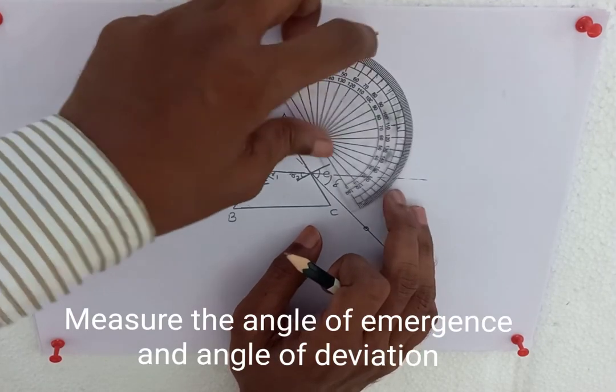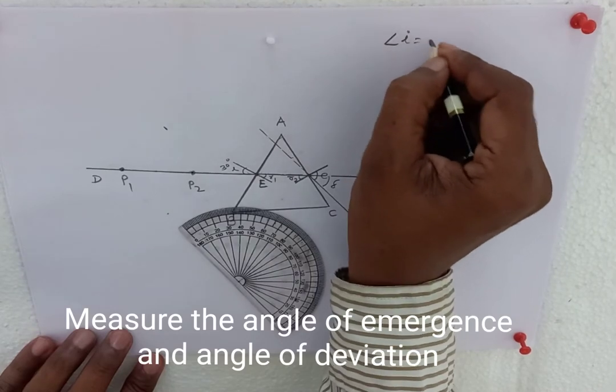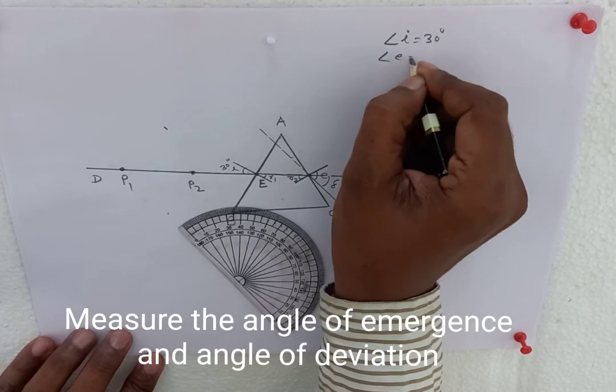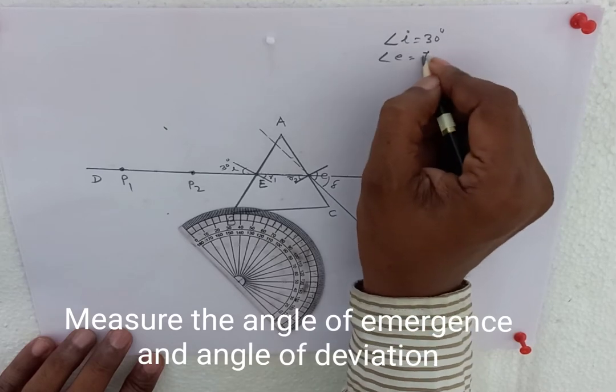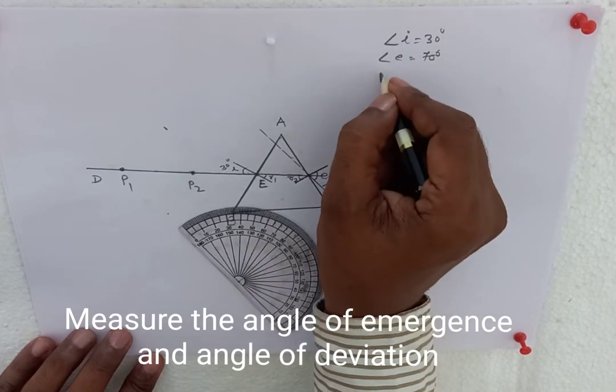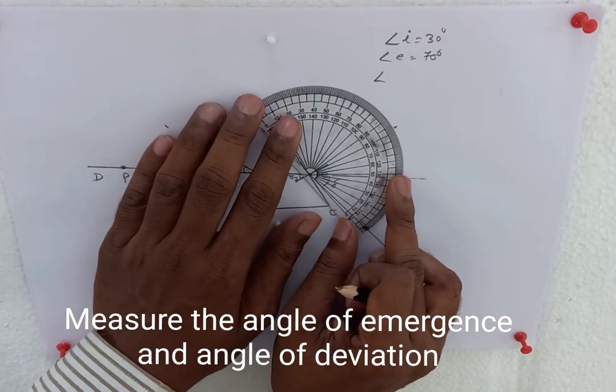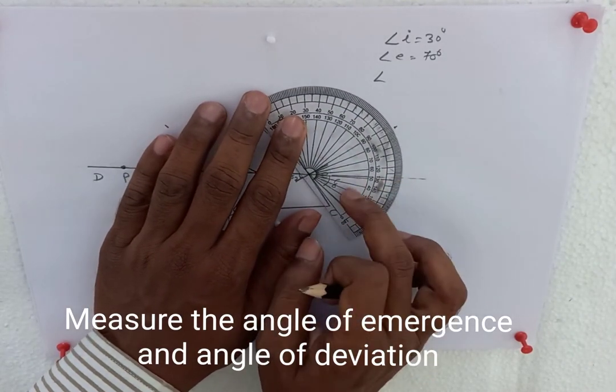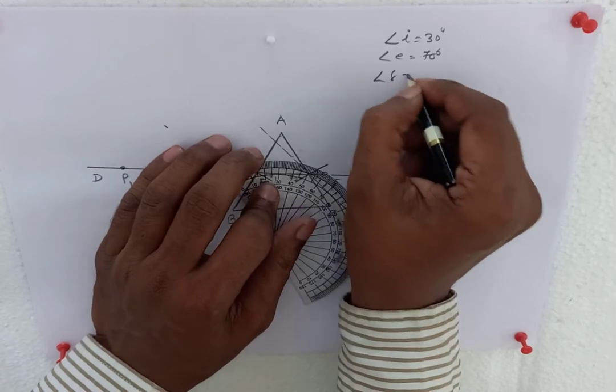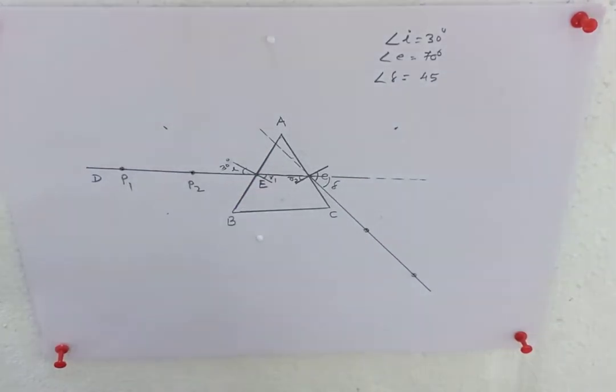Measure the angle of emergence. Angle of incidence is 30 degrees, angle of emergence 70 degrees. Measure the angle of deviation.